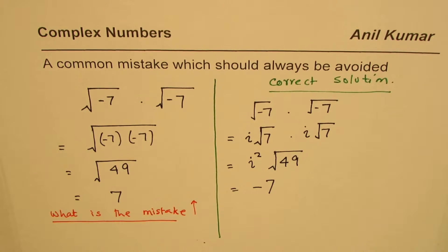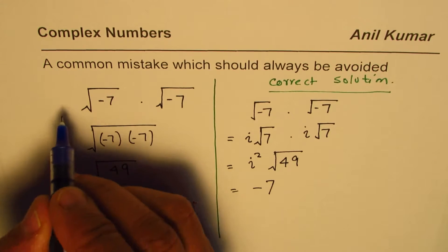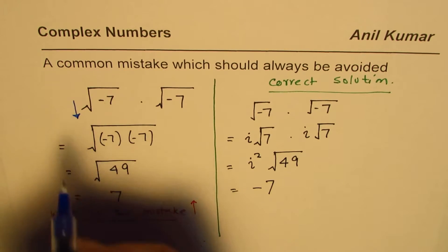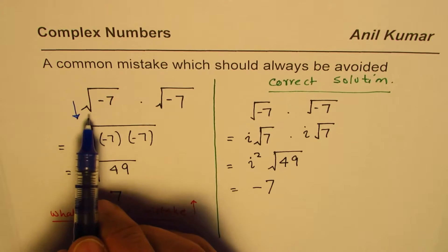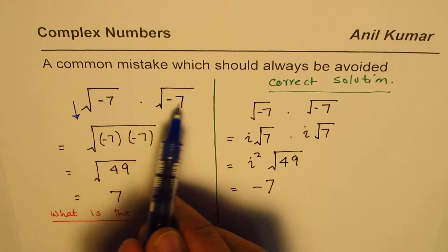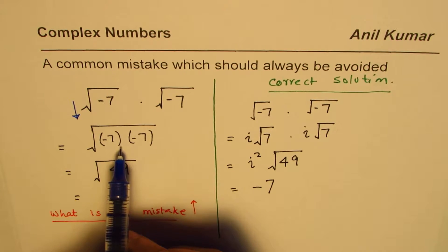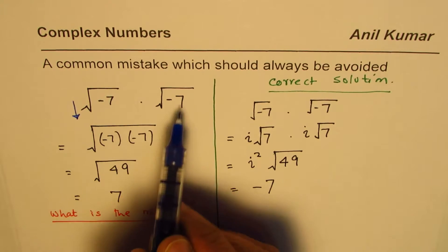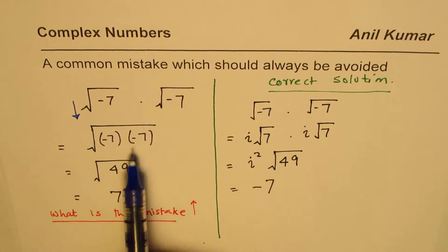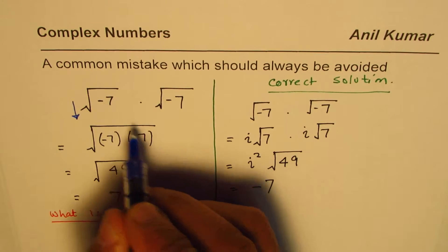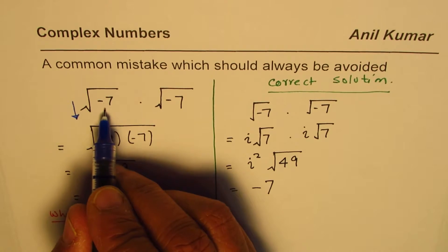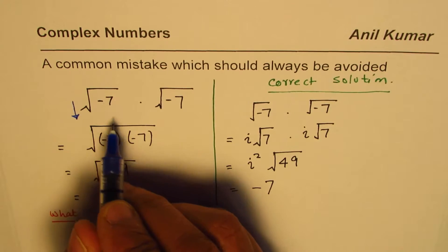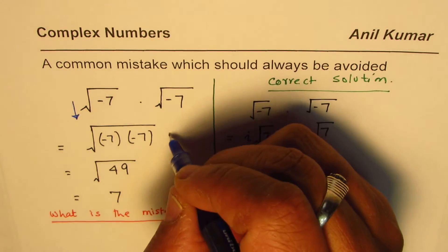This is the right solution and that is the wrong solution. The reason is that combining square root of minus 7 times square root of minus 7 into a single radical cannot be done — that is not valid. This rule is only valid when the numbers within the radical are positive. That step is what is incorrect.